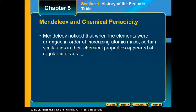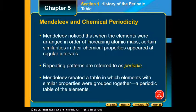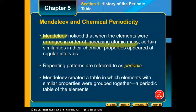Mendeleev is one of our scientists. He noticed that when you arrange the elements in order of increasing atomic mass, certain similar chemical properties appeared at regular intervals. This is where the term 'periodic' comes into play. He arranged them in order of increasing atomic mass — all of the elements that had been discovered at that particular time. These repeating patterns are periodic, and he created a table with these elements to show similar properties being grouped together. Mendeleev is given credit for that first periodic table.